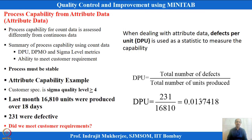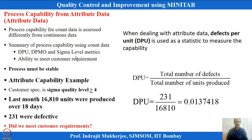Now, in case of attribute data — where we have defects or defectives — how do we calculate sigma levels or process capability? For continuous data, the earlier method works well. In case of process using count data, other units are used: defects per unit, defects per million opportunities (DPMO). Based on that, we can determine the sigma level. The normal distribution assumption is used to make this conversion from defects per unit or per opportunity back to sigma level.